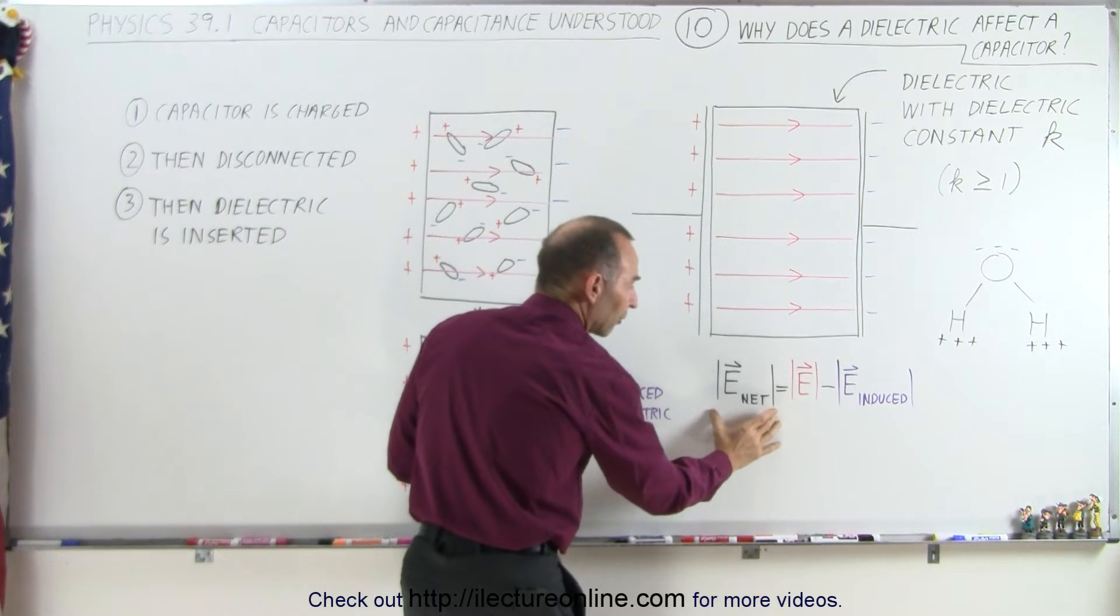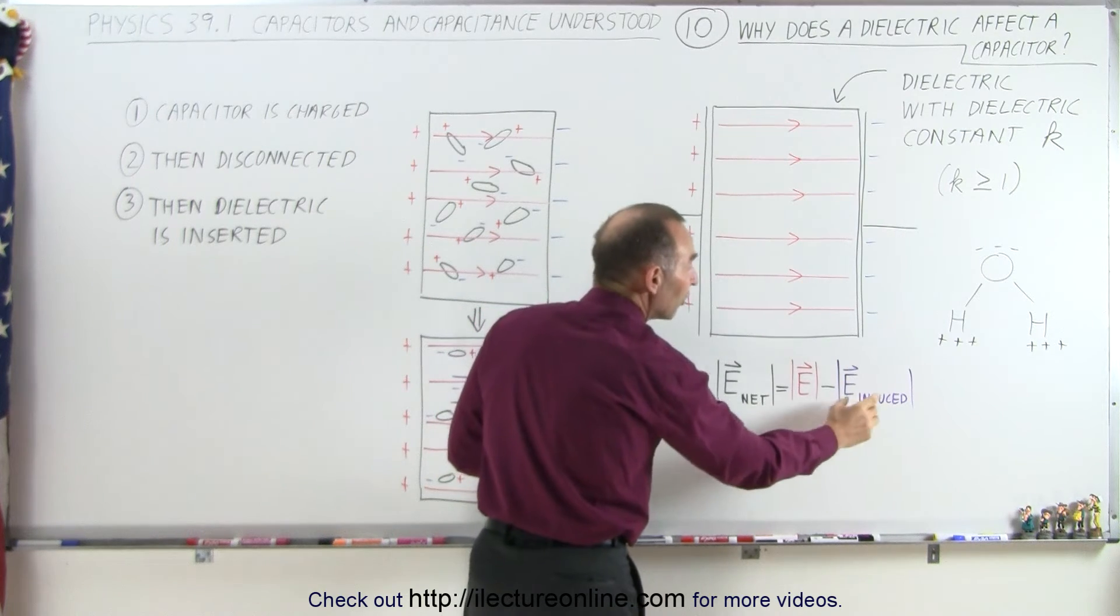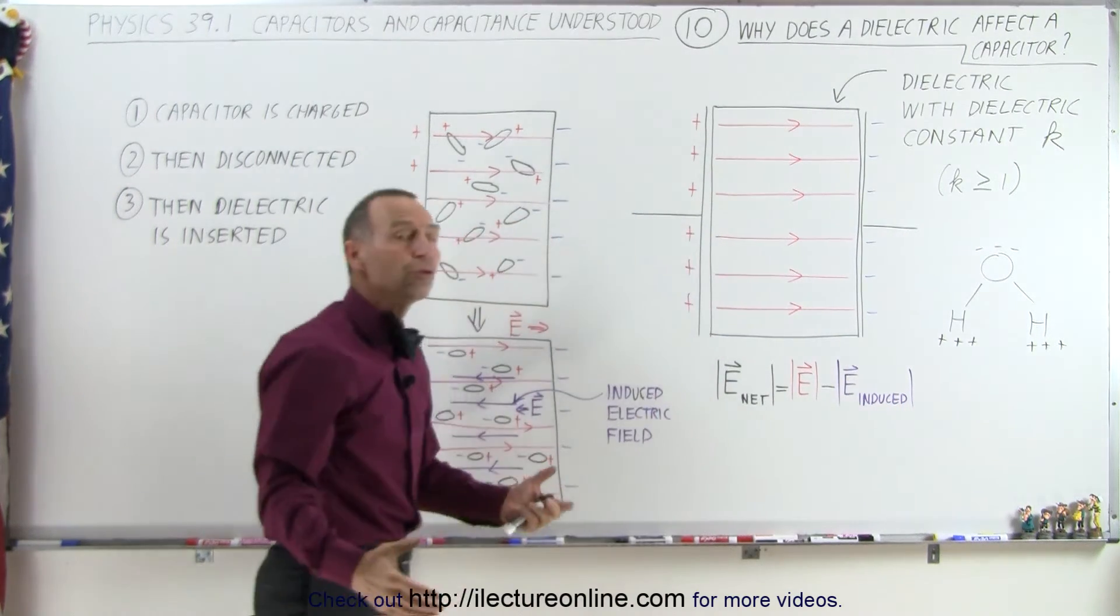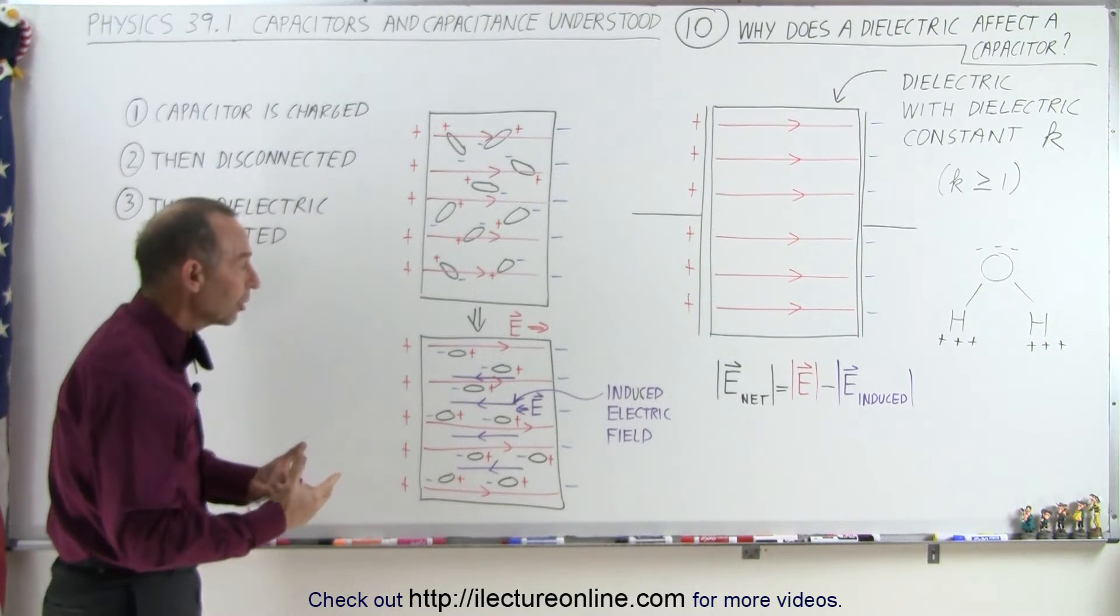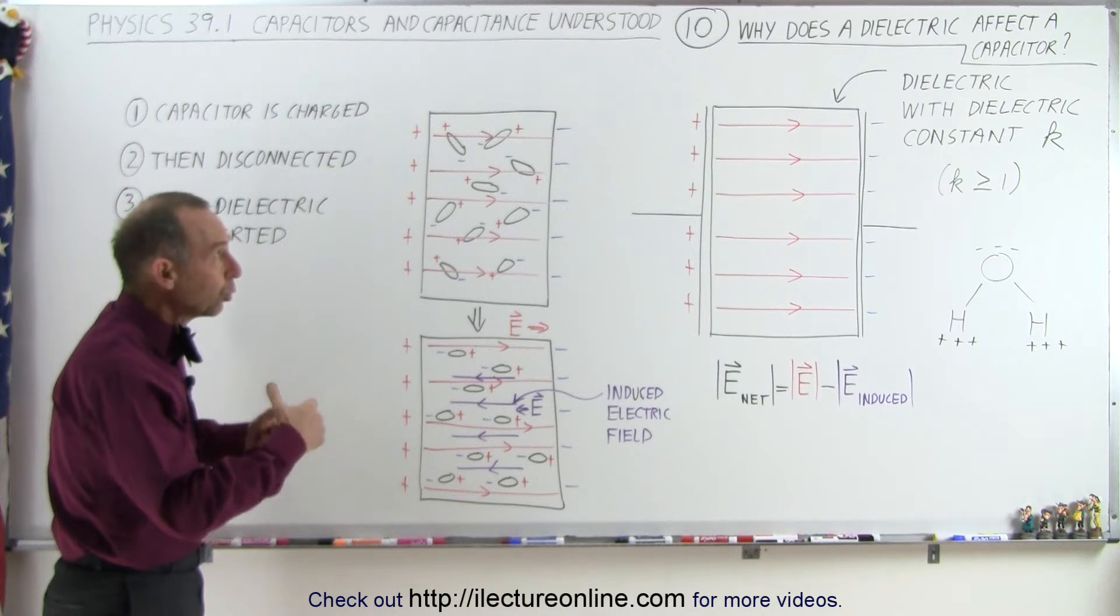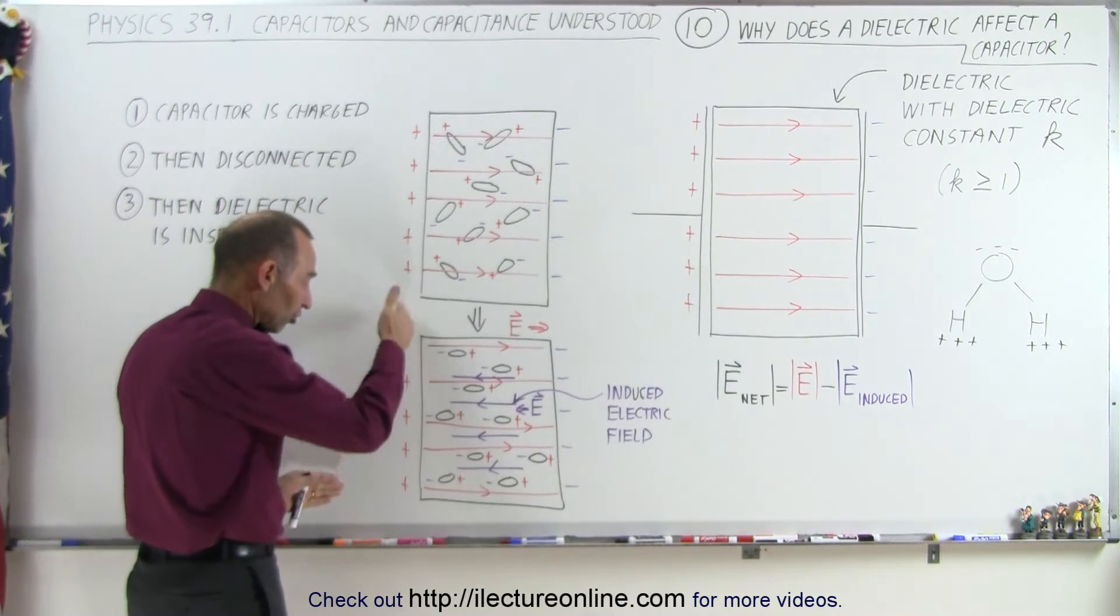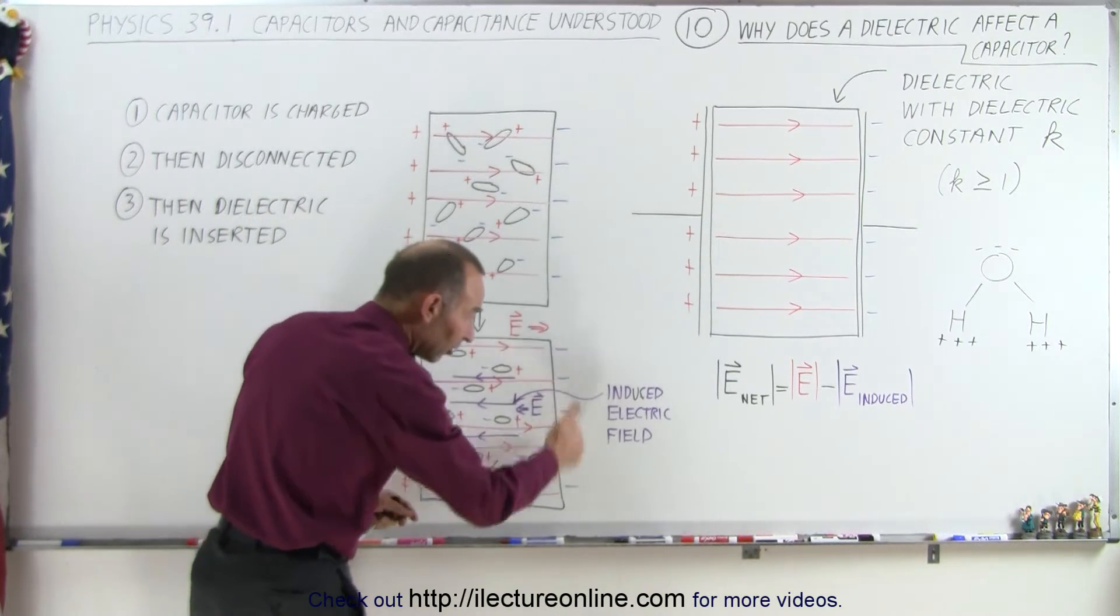Which then means that the net electric field strength between the plates will actually drop. The magnitude of the net electric field will be equal to the magnitude of the original field minus the magnitude of the induced field, so now we have a net result of a weaker electric field, and that weaker electric field will cause less interaction between the charges on one side and the charges on the other side.